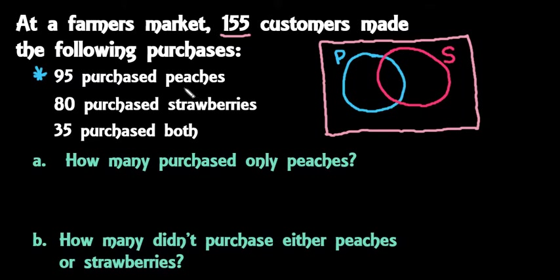The starting place is the overlap. This is what I want to start with — it says 35 purchased both, so I'm going to write 35 inside the overlap region. Always start with the overlap.